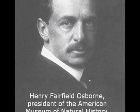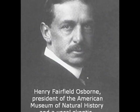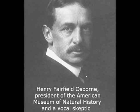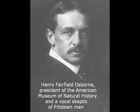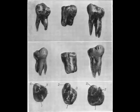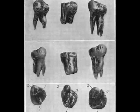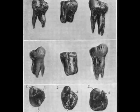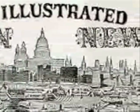Even before the Piltdown hoax was officially exposed, an American paleontologist earned himself a lifetime of embarrassment when he found a tooth from an extinct species of pig in Nebraska and mislabeled it Hesperopithecus. The cheek teeth of pigs and peccaries are fairly similar to ape molars, and this one was badly worn such that Henry Fairfield Osborne initially believed it to be human. But the real embarrassment came when he publicized his find in a popular magazine rather than submitting it to peer review first.